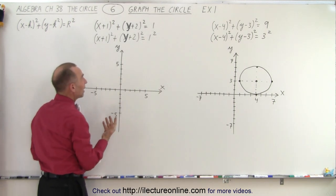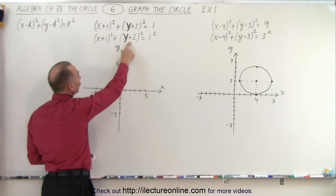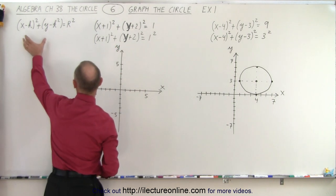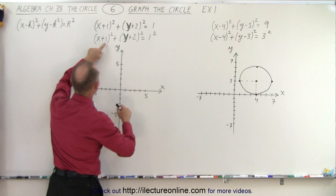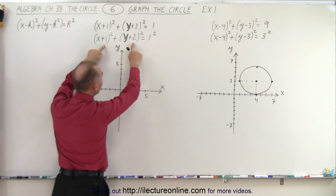Now we go over here and we do the same thing. But notice instead of negative signs we have positive signs there. And since the general equation shows negative signs that means that h and k in this case are negative not positive.